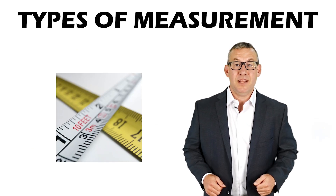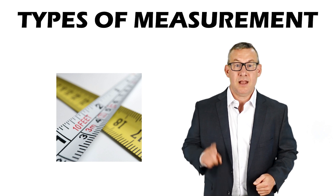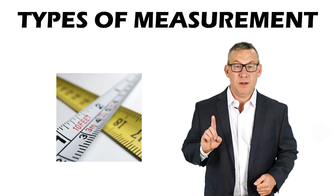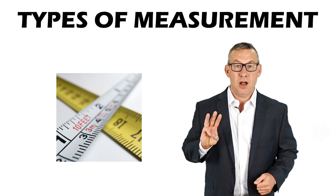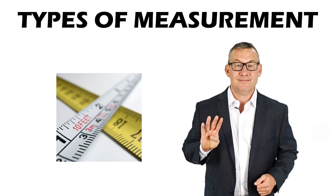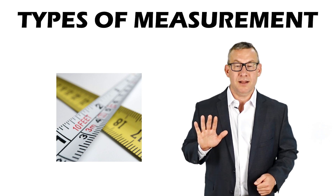There are five types of measurement: physical measurement, observation of behavior, archives, explicit reports, and computational modeling.